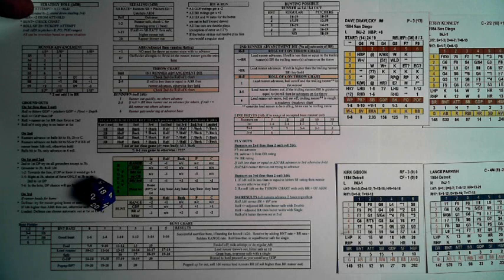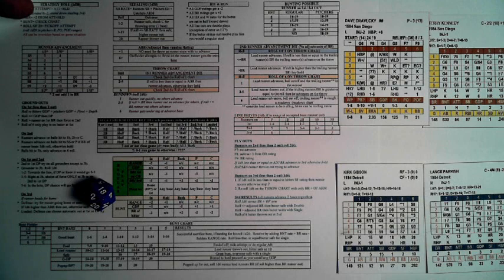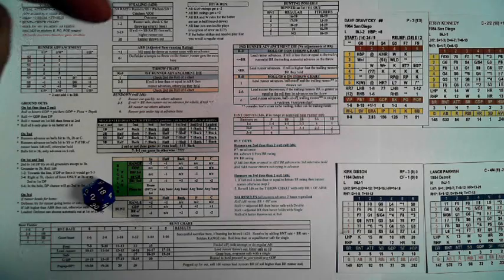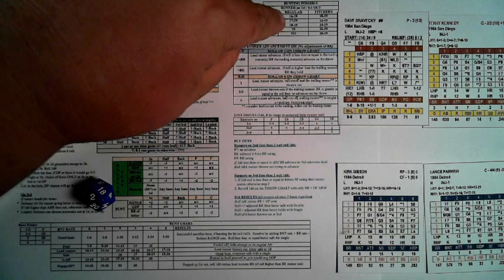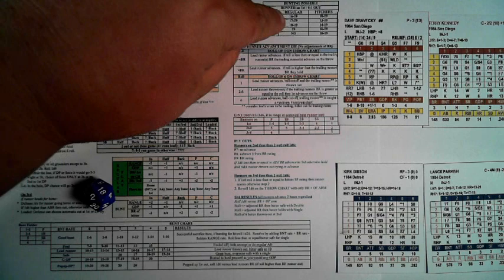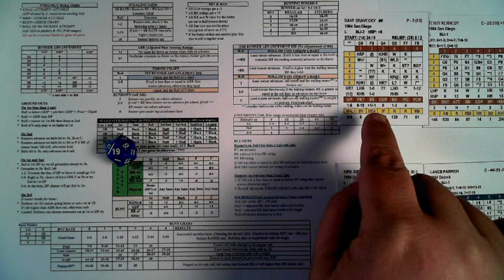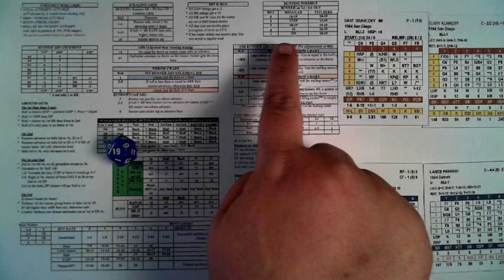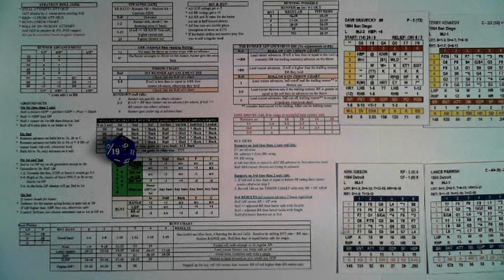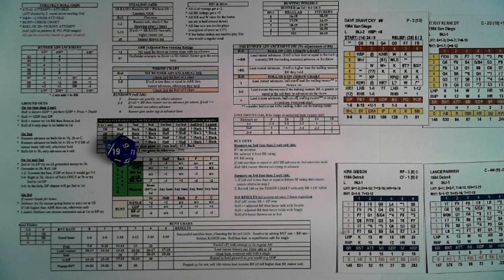So on a single 1d20 roll you check everything at once. One through six is an attempted stolen base. Seven and eight would be a hit and run. For bunting, if the bunt rating is three, the player needs to roll 14 through 19. If he rolls a 19, he's laying down a sacrifice bunt. That's how you do the strategy roll — one roll covers steal, hit and run, and bunt all at once.